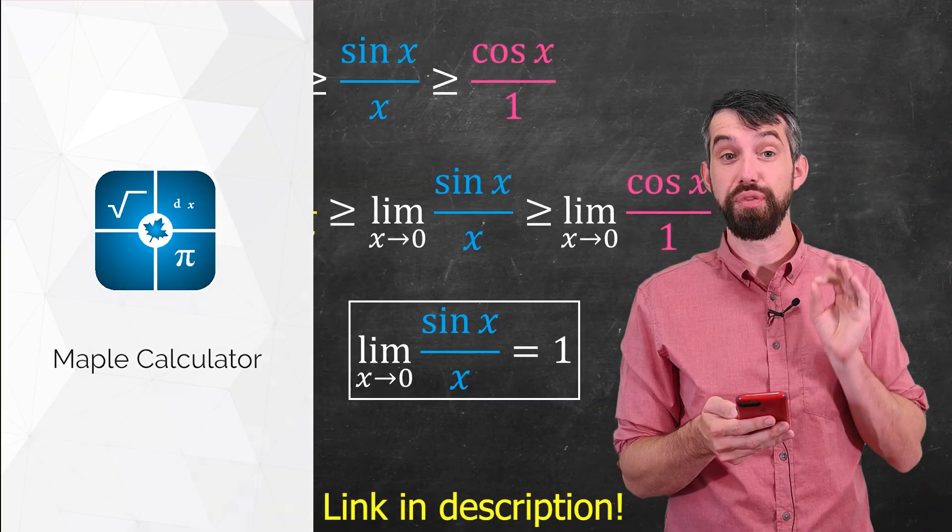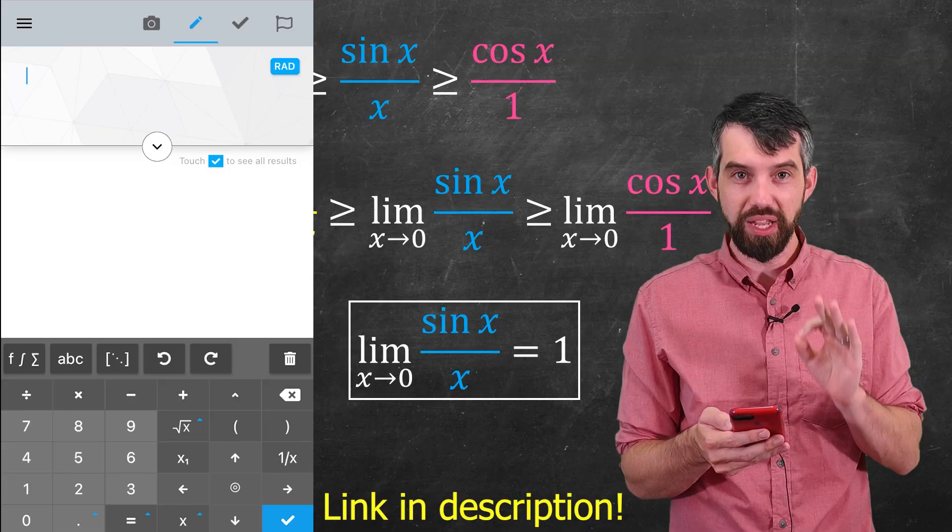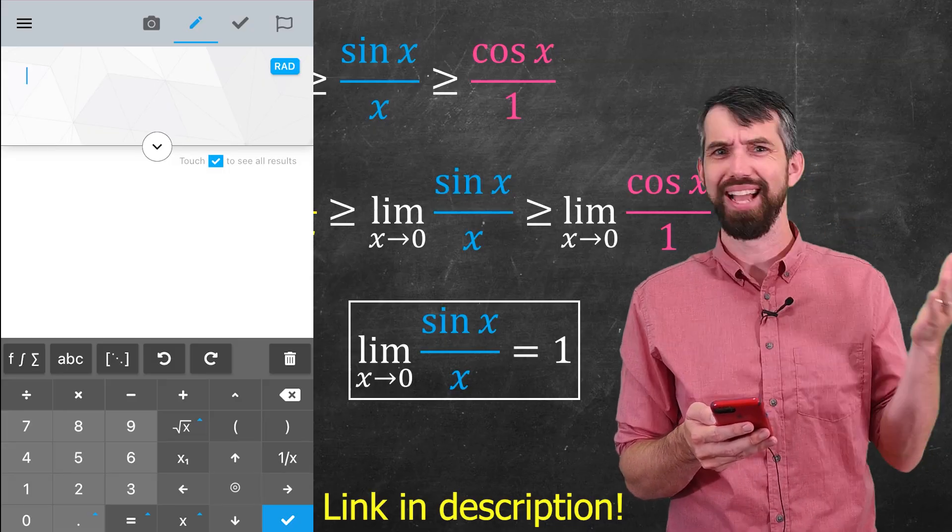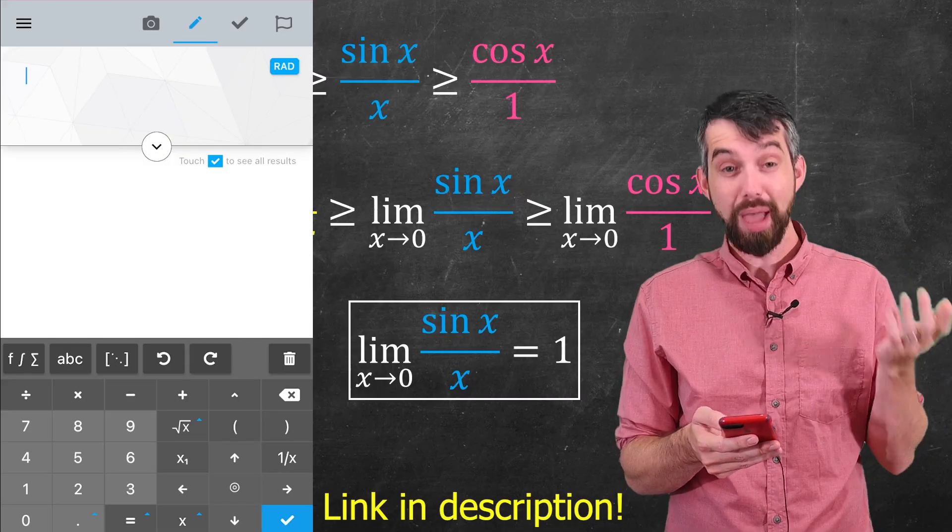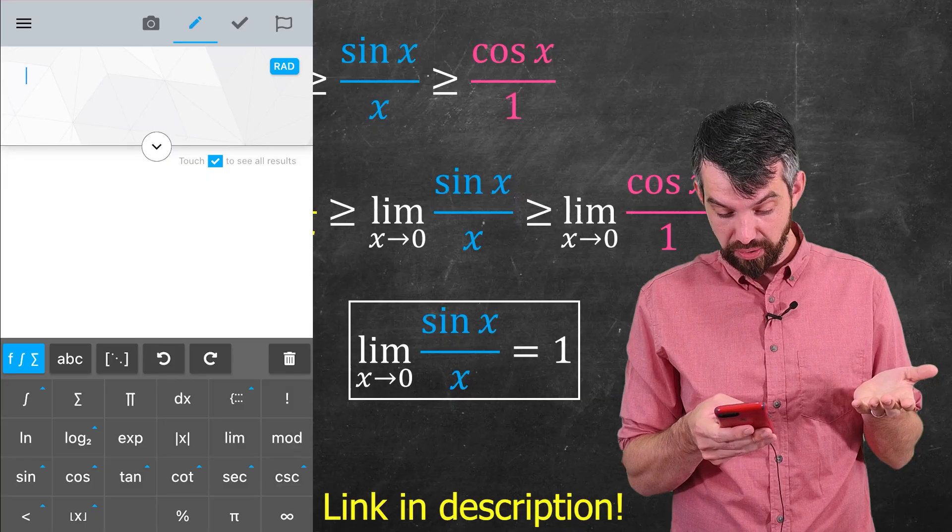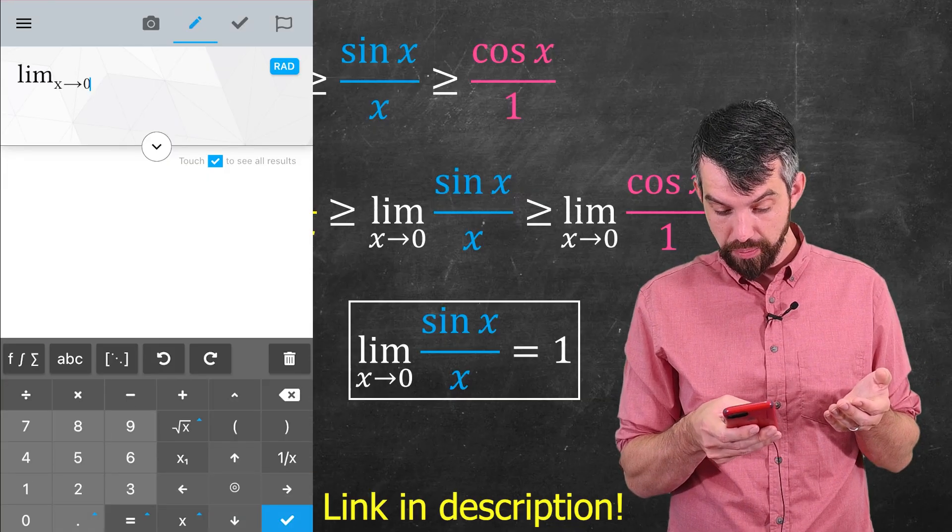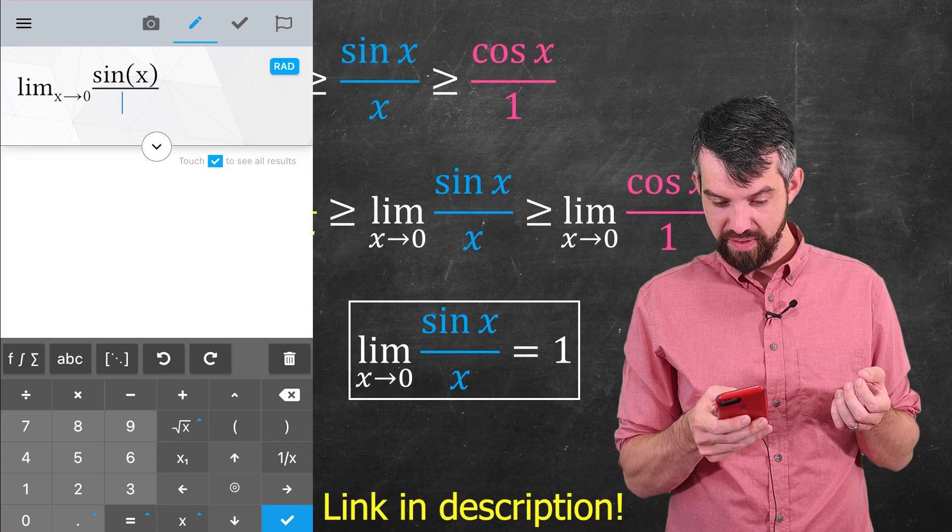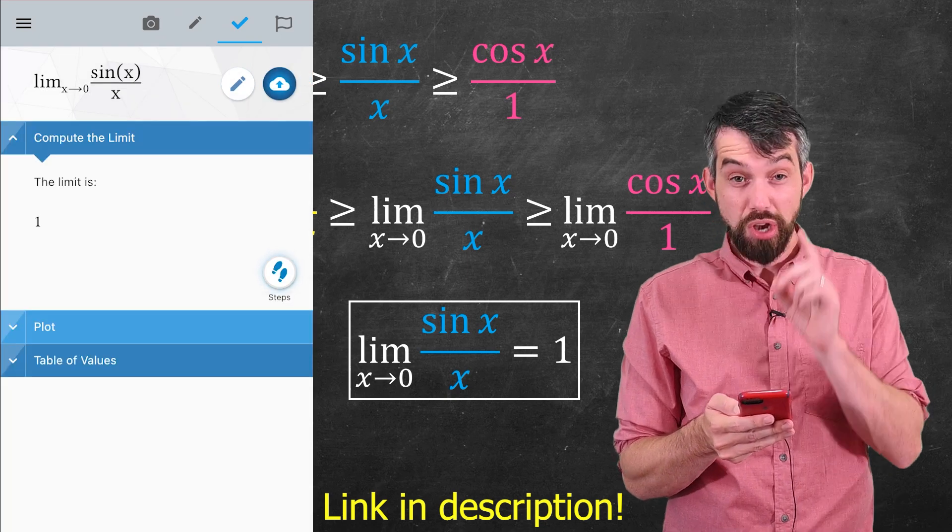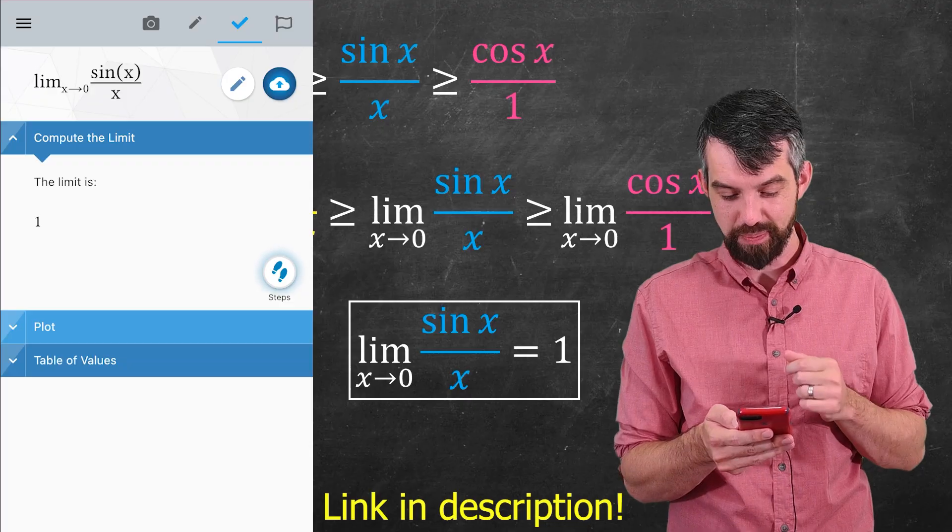Indeed, I'm going to go very briefly to the Maple calculator, which is by far the best and free calculator app for your phone. It's not even really a calculator because it just does so much incredible mathematics. And what I'm going to do is input this particular limit. So I'll do the limit as x goes to 0 of sine of x divided out by x here.